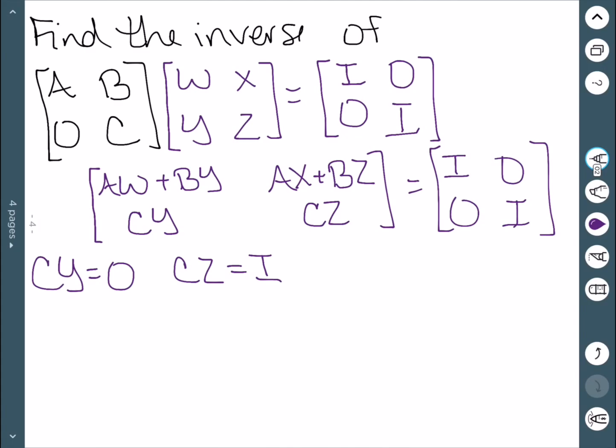When we first learned about matrix multiplication, we pointed out that just because two matrices multiply to be zero, does not mean one of them is zero. So let's start with this second equation. Our invertible matrix theorem says that if I have two matrices that multiply to be the identity, they are inverses. Which means Z is just C inverse. So now I have this nice thing for Z. The fact that C is invertible, and I now know that, means I can multiply both sides in this first equation by the inverse to get that Y is actually zero. So now I know what two of my matrices look like.